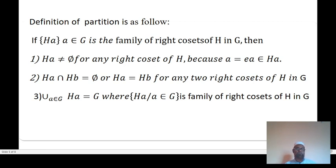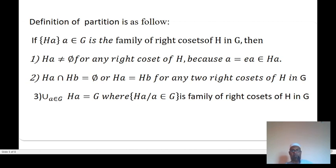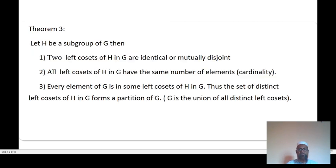Three, the union of all right cosets — union of HA for A belonging to G — equals G. Where {HA : A ∈ G} is the family of right cosets. This is the definition of a partition: if {HA} forms a partition, these three conditions are satisfied.